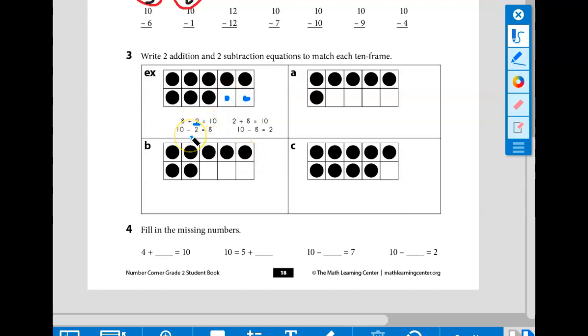Our second equation says 10 minus 2 equals 8. Imagine we had 10 dots all to start with. Now we took two away. And now we have 8 dots left. You can think of an addition equation that's the opposite of your first one, and a subtraction equation that's the opposite of your first one. That's how you solve number three. Do all three boxes.